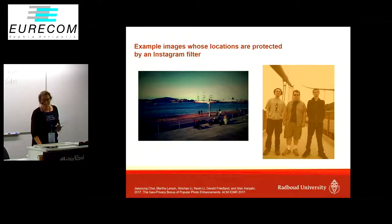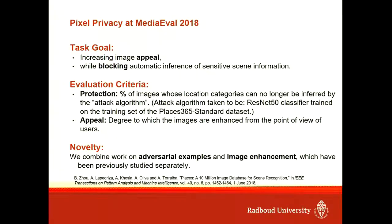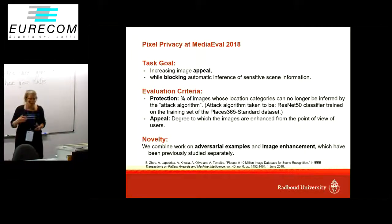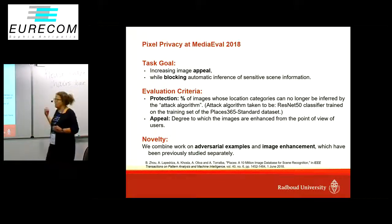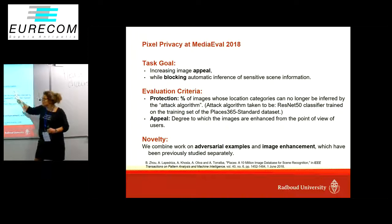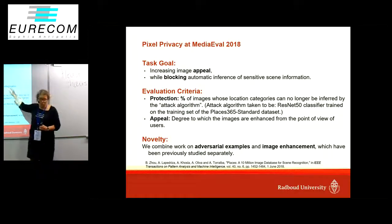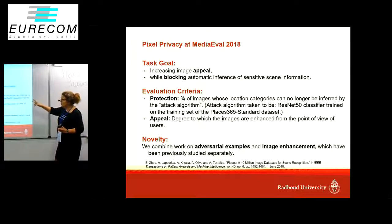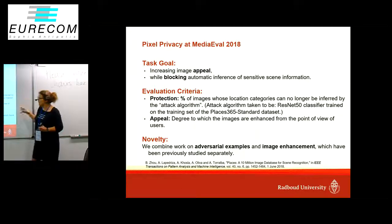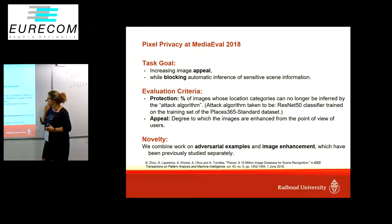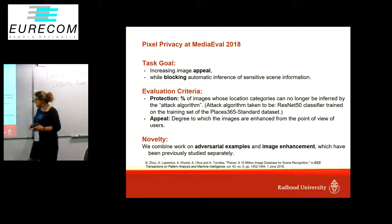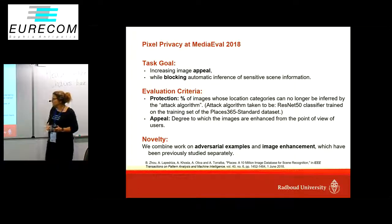10% is not enough, so we started Pixel Privacy to see if we could drive this idea into a workable system. The task goal is to increase image appeal — we don't want to ruin the image, we want to incentivize users to use our image enhancements because they look cool, and at the same time those cool-looking enhancements should block the automatic inference of sensitive information, concentrating on scenes. Our evaluation criteria is twofold: the percentage of images whose location categories can no longer be inferred by the attack algorithm — a ResNet classifier trained on the Places 365 dataset — and the appeal, the degree to which images are actually enhanced from the point of view of users.